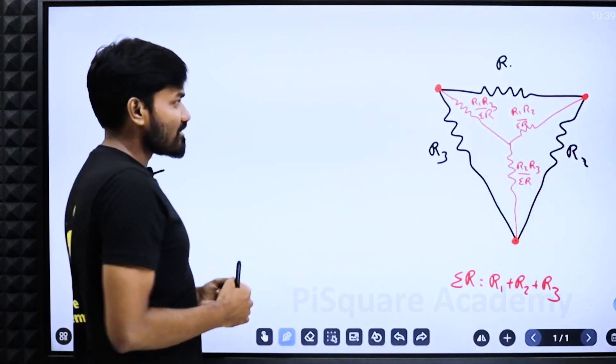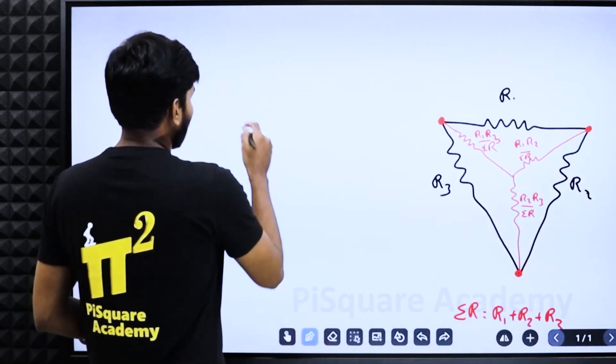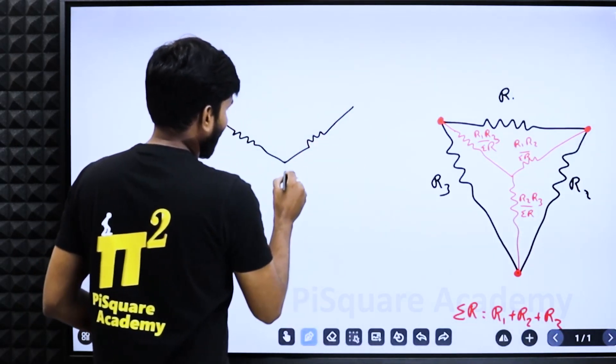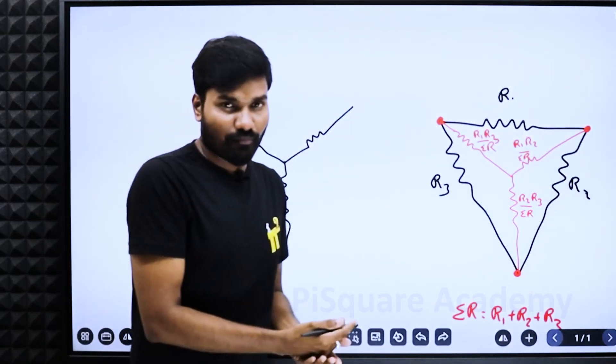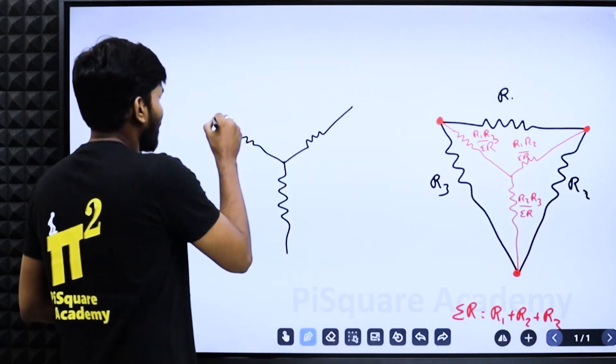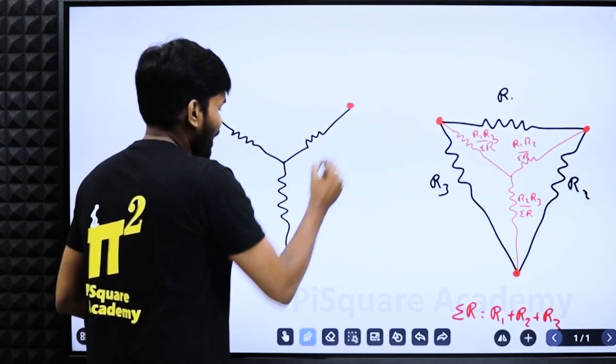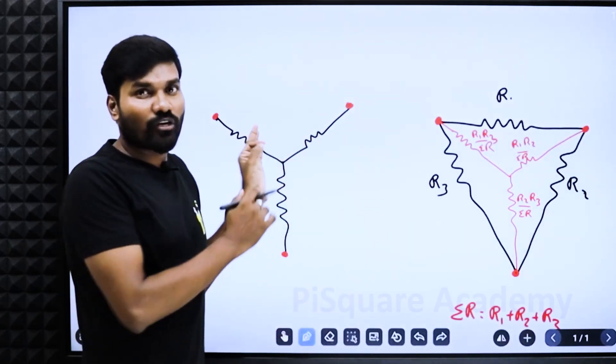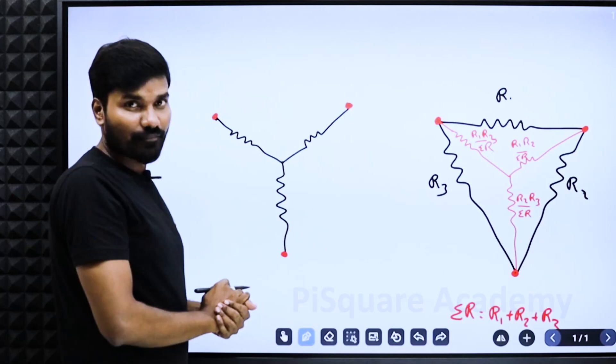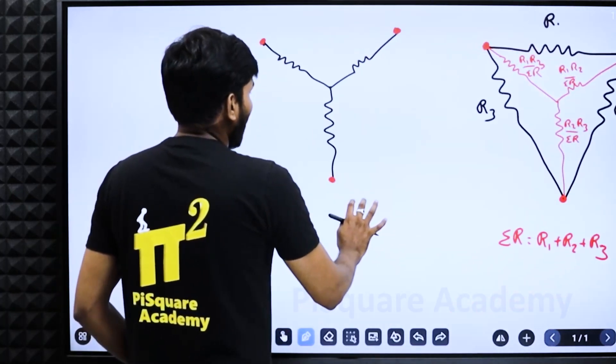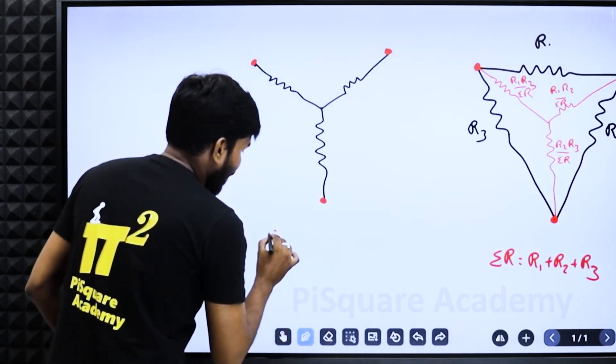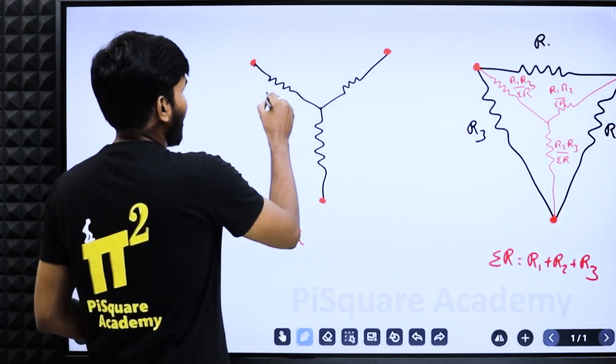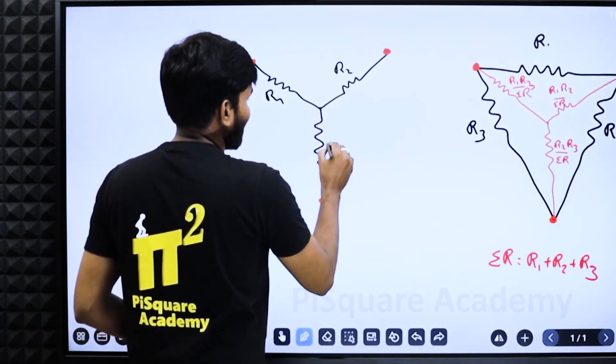Suppose if I have a star connection. I want to convert it into delta connection. First step, mark the three points. Identify and mark the three points of the star connection. This is the neutral point, I am not talking about this. The other points are given.